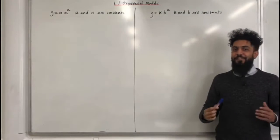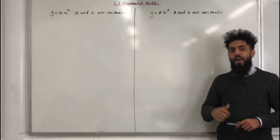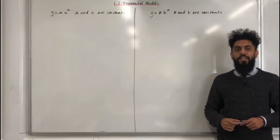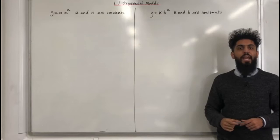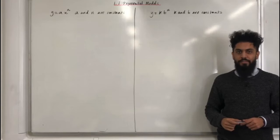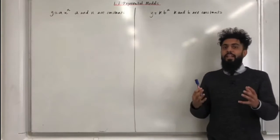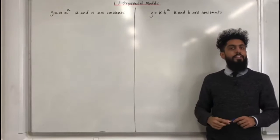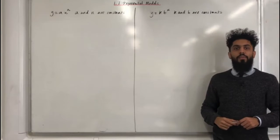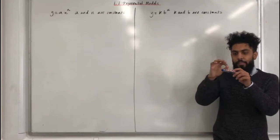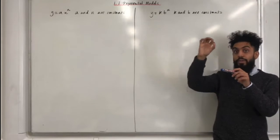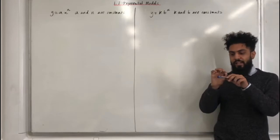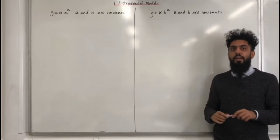Welcome back. In this video, I'll be looking at 1.1 Exponential Models. 1.1 represents Chapter 1, Section 1 of the Pearson A-Level Maths Applied Maths Tier 2 textbook. An exponential model is a model for which the graph rises rapidly or depreciates rapidly with respect to an increase in the independent variable.